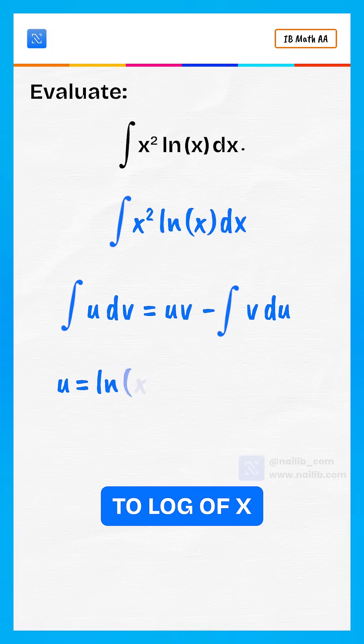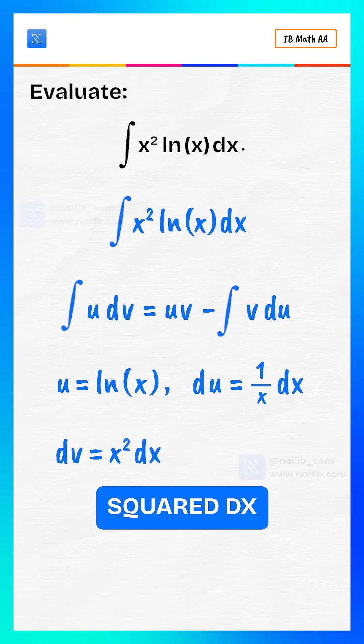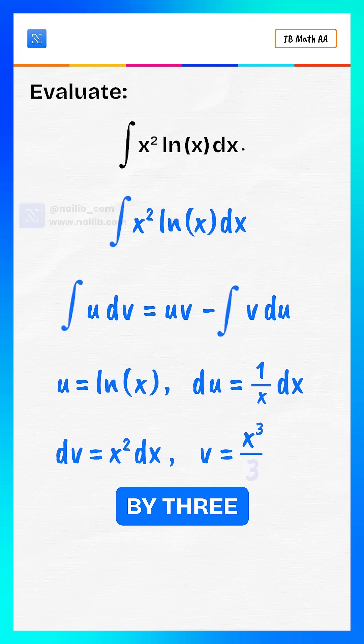Let u equals log of x, so du equals 1 over x dx. Let dv equals x squared dx, so v equals x cubed divided by 3.